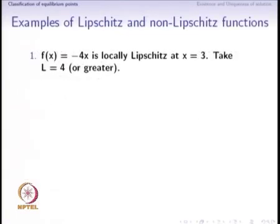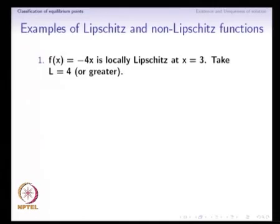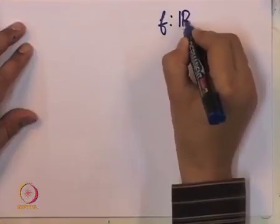We will see some examples of Lipschitz and non-Lipschitz functions. For example, the function f equals minus 4x is locally Lipschitz at the point x equals 3. If it is Lipschitz, we should be able to give a number L such that the inequality is satisfied, and here we can take L equals 4 — the absolute value of the slope. To understand the Lipschitz condition, we will take the graph of a function f for the case that f is a map from R to R.